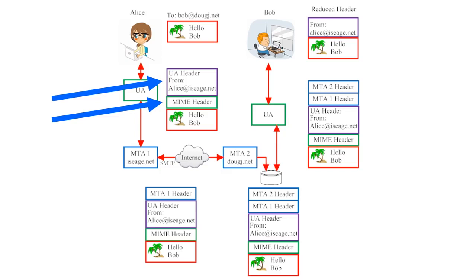MIME stands for Multipurpose Internet Mail Extension. When email protocols were first designed, they were only designed to handle plain text messages. However, MIME allows email systems to work around this limitation. The MIME header allows emails to carry different design elements that go beyond plain text — elements such as images, special fonts, and file attachments. The MIME header on an email will explain what the email contains; in this case, it will say that Alice's email contains text and an image.